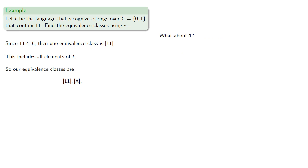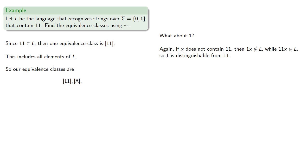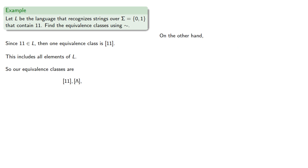What about 1? If x does not contain 11, then 1x is in L only if the appended x completes 11, while 11x is always in L, so 1 is distinguishable from 11 and is not in that equivalence class. On the other hand, if we append 11, then 1·11 is in L, but lambda·11 is not, so 1 is distinguishable from lambda and isn't in that equivalence class either. So 1 forms a new equivalence class.